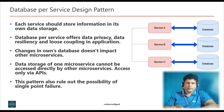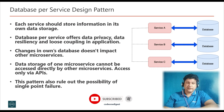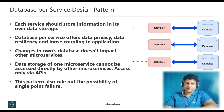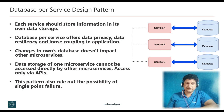Now let's start with the database per service design pattern. This is the first design pattern in the database design pattern category. Database per service design pattern offers data privacy, data resiliency, and loose coupling in your application. Loose coupling is the key characteristic of a microservices architecture. Hence, microservices should store the information from its own data store. This pattern provides flexibility to choose the most appropriate data store — relational or non-relational database — for your application and business requirement.